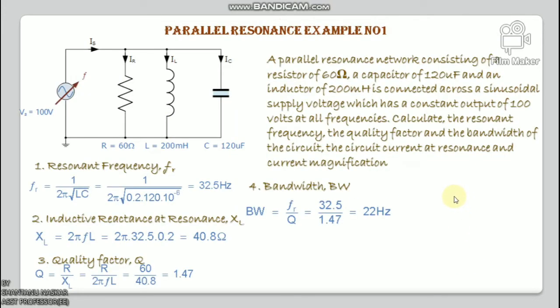Now I will go through an example. A parallel resonance network consisting of a resistor of 60 Ω, a capacitor of 120 μF, and an inductor of 200 mH is connected across a sinusoidal supply of 100 V at all frequencies. Calculate: the resonant frequency, quality factor, bandwidth, circuit current at resonance, and current magnification.